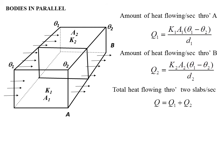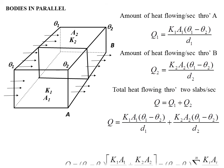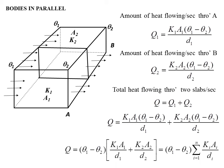Total heat flow equals Q1 plus Q2. Adding them: K1·A1 times (theta 1 minus theta 2) divided by D1, plus K2·A2 times (theta 1 minus theta 2) divided by D2. Therefore Q equals (theta 1 minus theta 2) times (K1·A1/D1 plus K2·A2/D2).